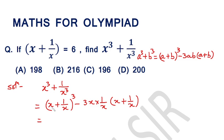Now we put the given value x plus 1 over x, which is 6. Then this becomes 6 cube minus, and cancel this x and x. Then 3 into 6.